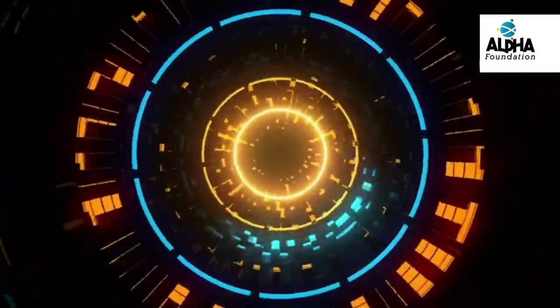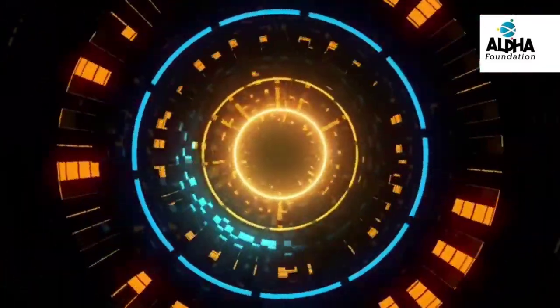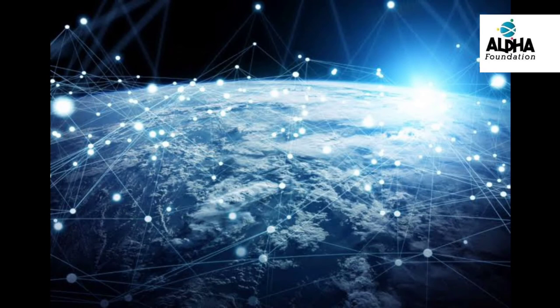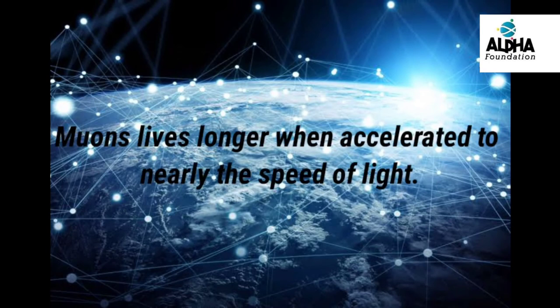Hawking wasn't actually proposing we try to build such a machine. But he was pointing out a way that time travel already happens today. For example, particles called muons are normally short-lived. They disintegrate after mere millionths of a second. But when they are accelerated to nearly the speed of light, their lifetimes expand dramatically. It seems that these particles are traveling in time, or at least experiencing time more slowly relative to other particles. It is like saying that the closest thing we have to a time machine is a particle accelerator.